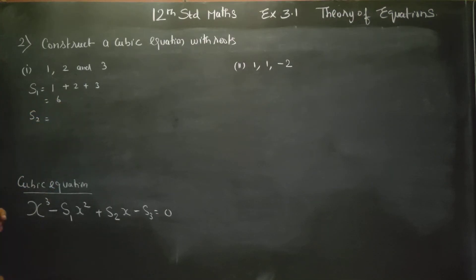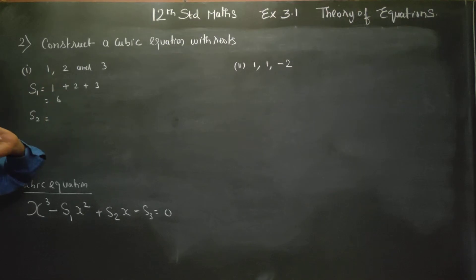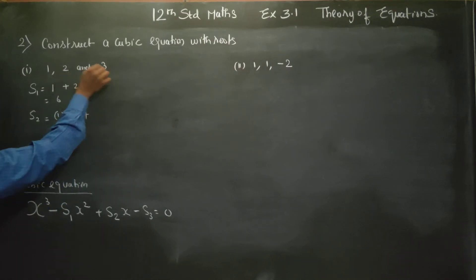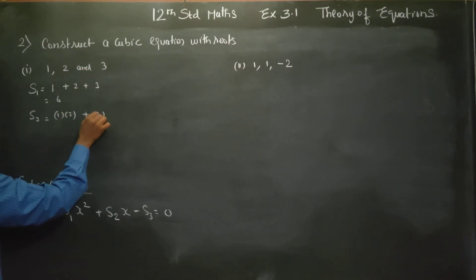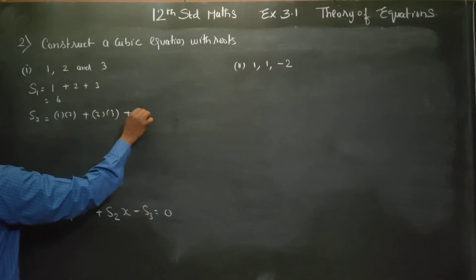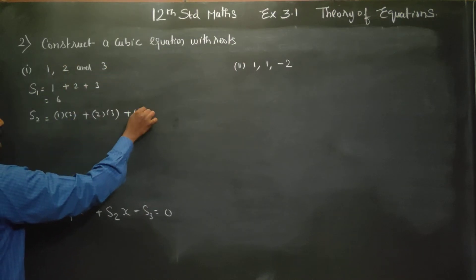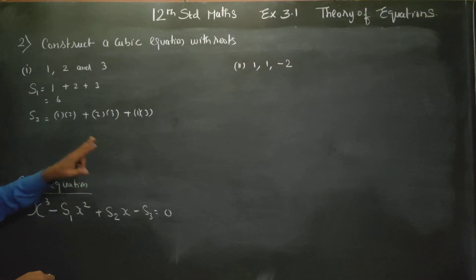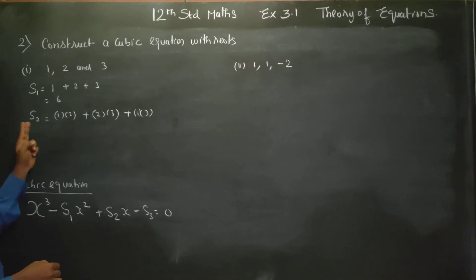s2 is the summation of two roots taken at a time. That means: first root into second root, plus second root into third root, plus first root into third root — multiply, multiply, and multiply, then add. This is the summation of two roots taken at a time.